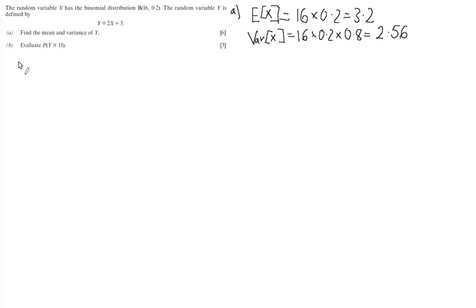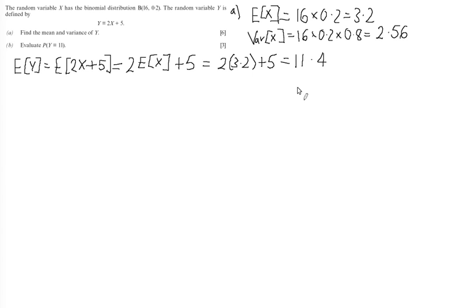Next, we can start to calculate the expectation of Y and the variance of Y using linear identity. The expectation of Y is exactly the same as calculating the expectation of 2X + 5. This then, using the linear identity, is exactly the same as calculating 2 multiplied by the expectation of X plus 5. So we're going to get 2 lots of 3.2 plus 5. When I put this into my calculator and work it through, we get an answer of 11.4.